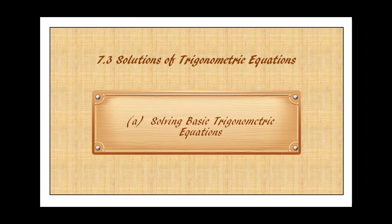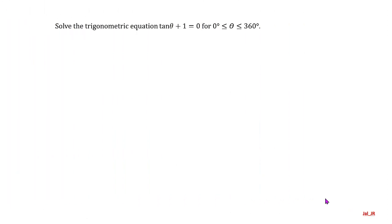I'm going to show you two examples on how to solve basic trigonometric equations. Suppose we wish to solve the equation tan(θ) + 1 = 0 for all values of θ in the interval from 0 to 360 degrees. To solve the equation, first isolate tan(θ) by subtracting 1 from both sides. Here we have tan(θ) = −1.